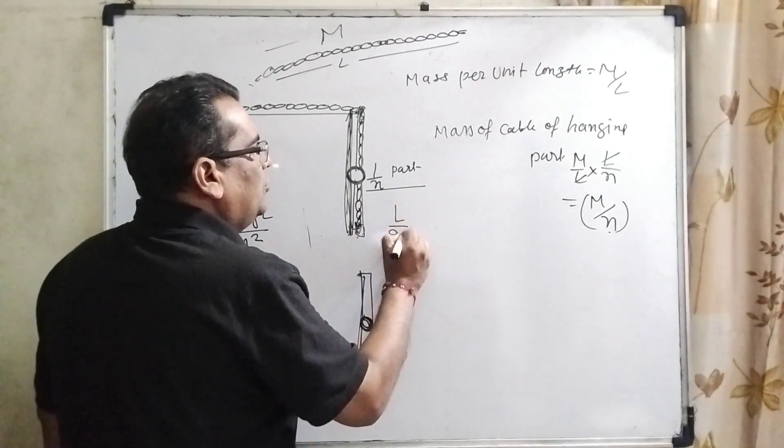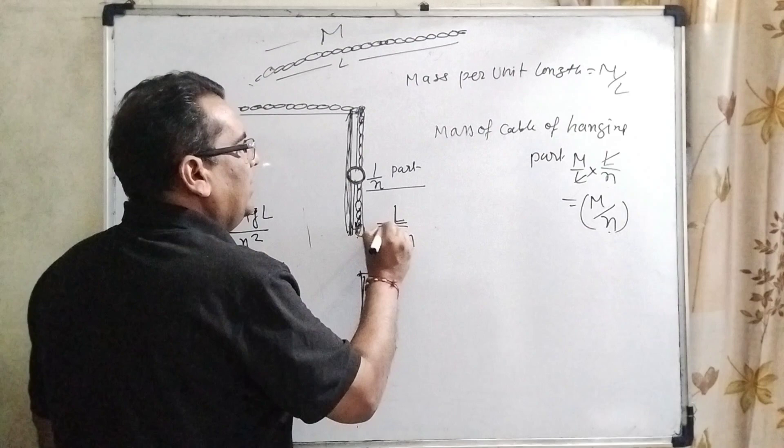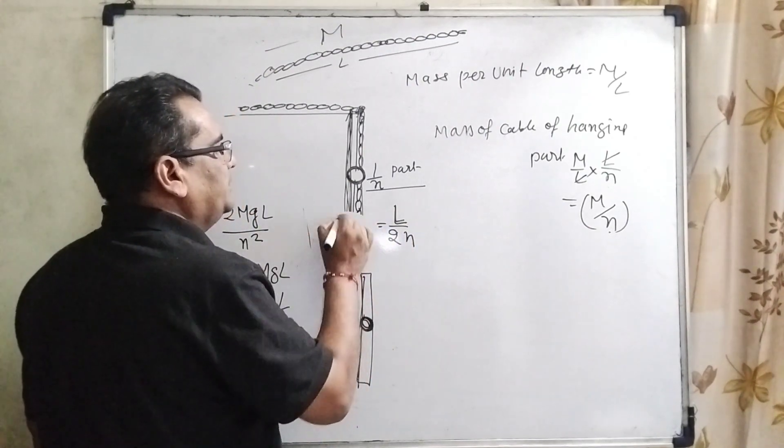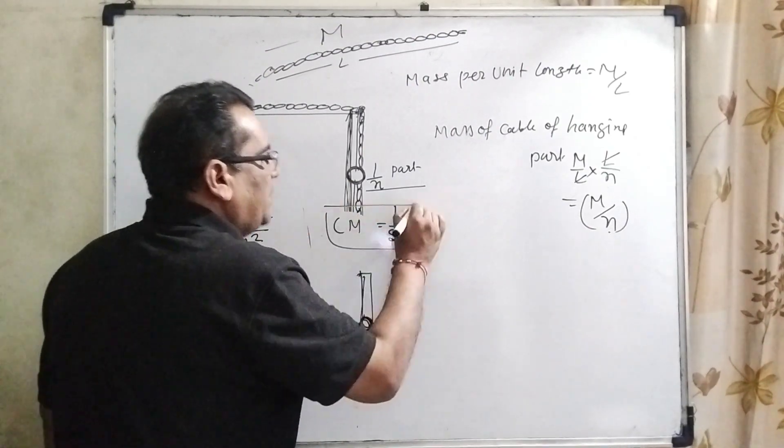It means L by 2n. L by 2n is the center of mass. I hope this point is clear.